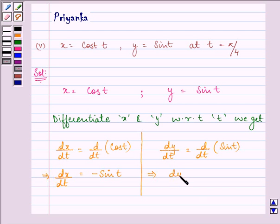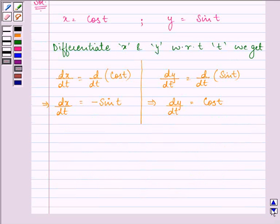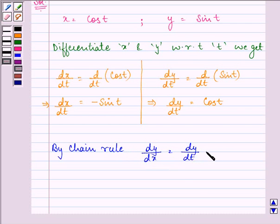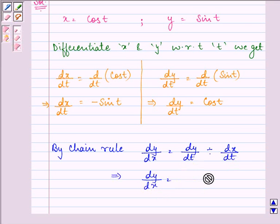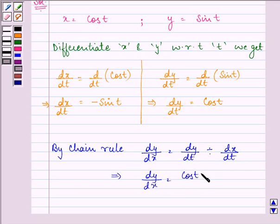And here we have dy by dt as the derivative of sin t which is cos t. Now, by chain rule that you must have studied earlier in the chapters, we have dy by dx equal to dy by dt divided by dx by dt.